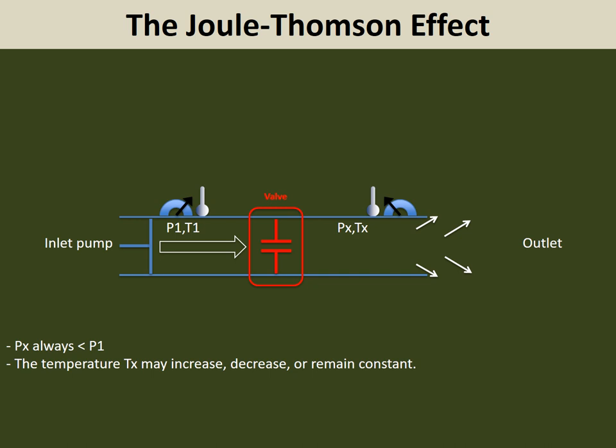The two countering effects are: first, the pressure energy being converted to heat; and second, a decrease in temperature because of the decrease in pressure. Depending on which of the two effects will dominate, we will have either heat or cooling at the outlet level.